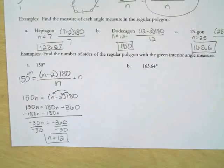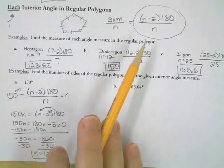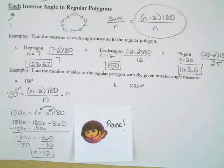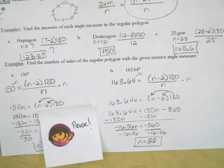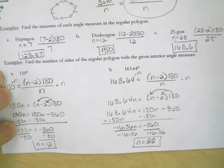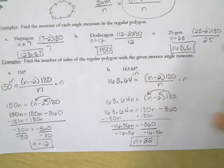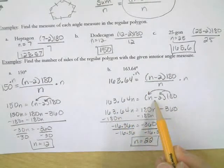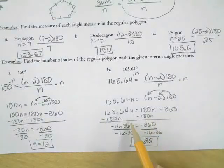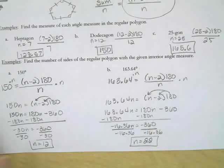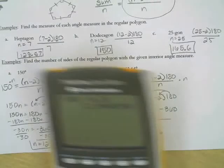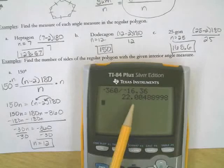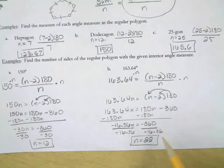Try problem B yourself — remember, the angle equals the formula (n minus 2 times 180) divided by n. For an angle of 163.64 degrees: multiply both sides by n to get 163.64n equals n minus 2 times 180. Distribute, then subtract 180n: negative 16.36n equals negative 360. Divide: n equals 22. So a 22-gon has angle measures of 163.64 degrees if it is a regular polygon.